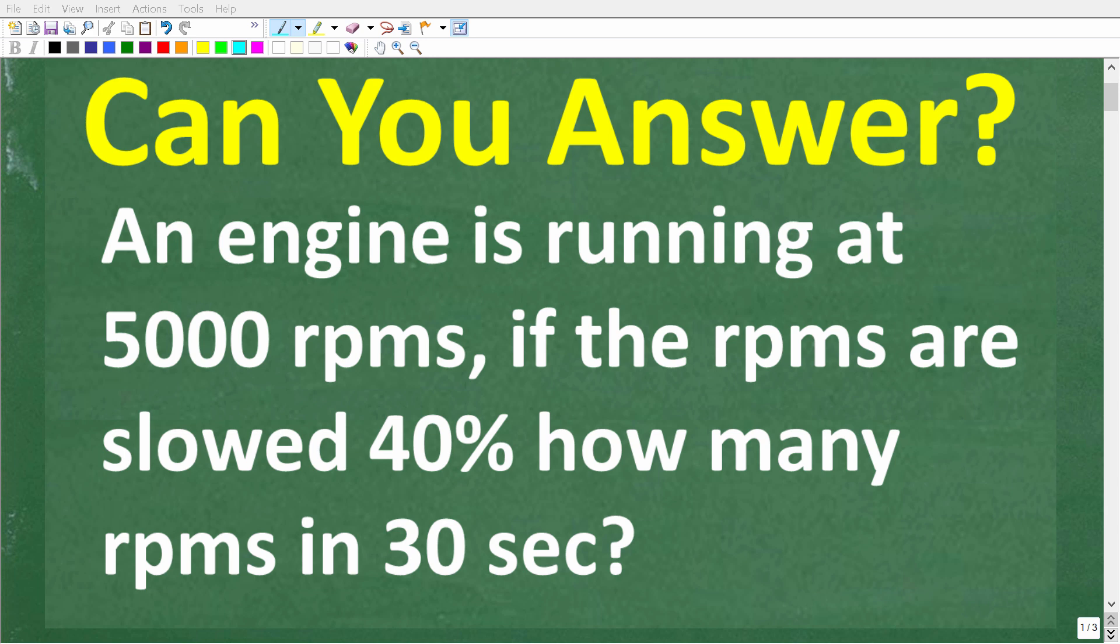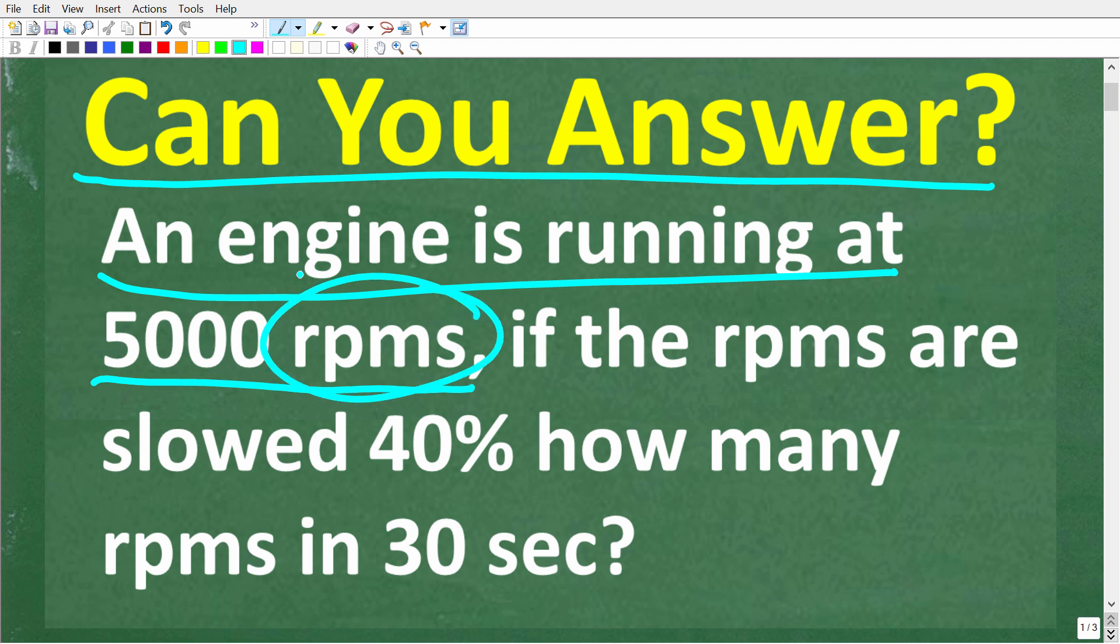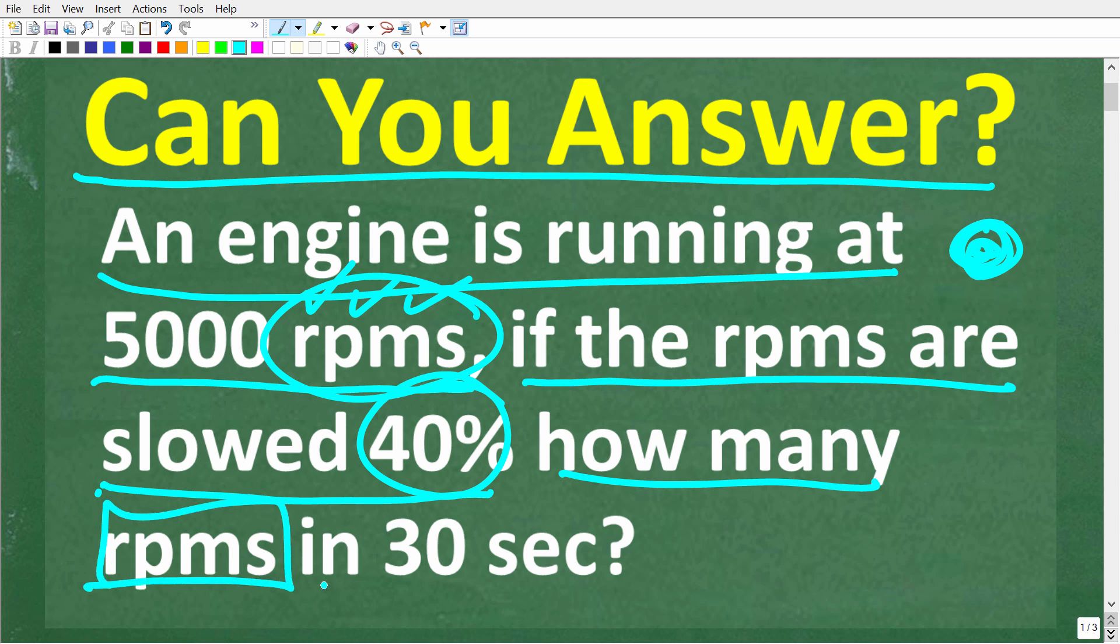Let's see if we can figure out the answer to this simple math problem. Here is the question. An engine is running at 5,000 RPMs. RPM stands for revolutions per minute. So the engine is basically turning 5,000 times every minute. If the RPMs of this engine are slowed down by 40%, how many RPMs or revolutions will be made in 30 seconds?